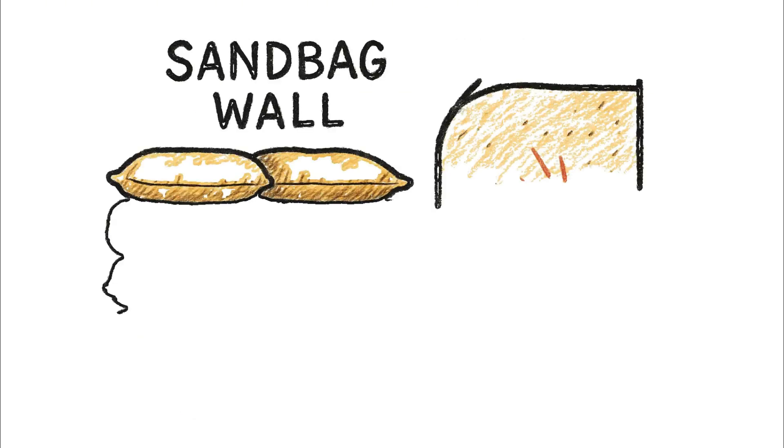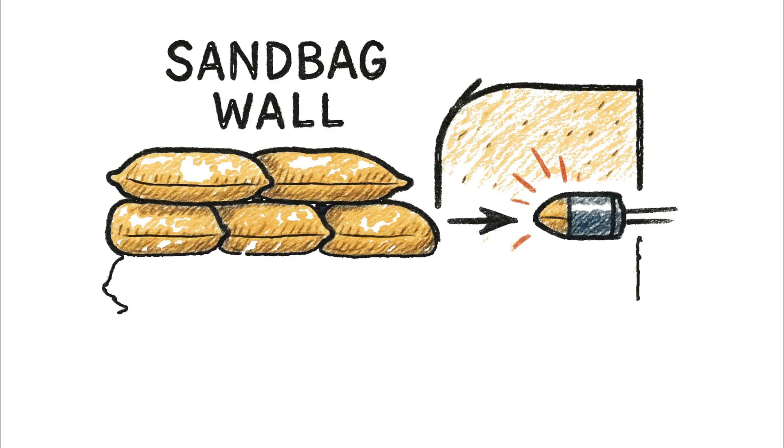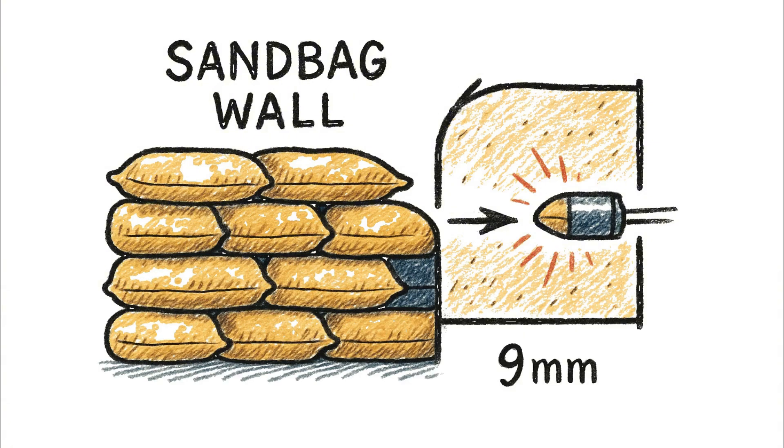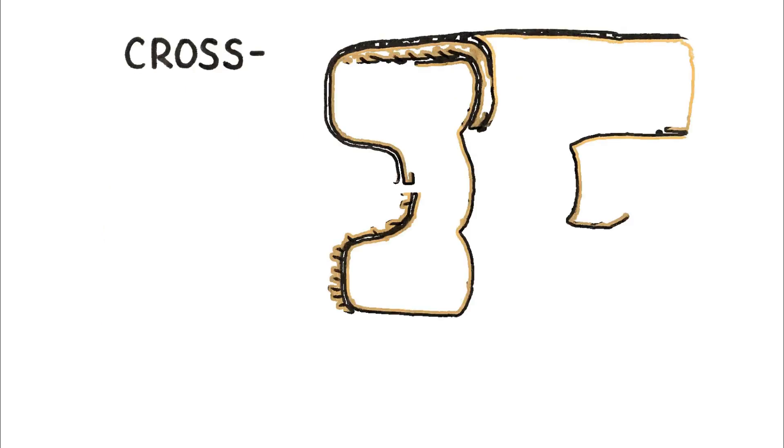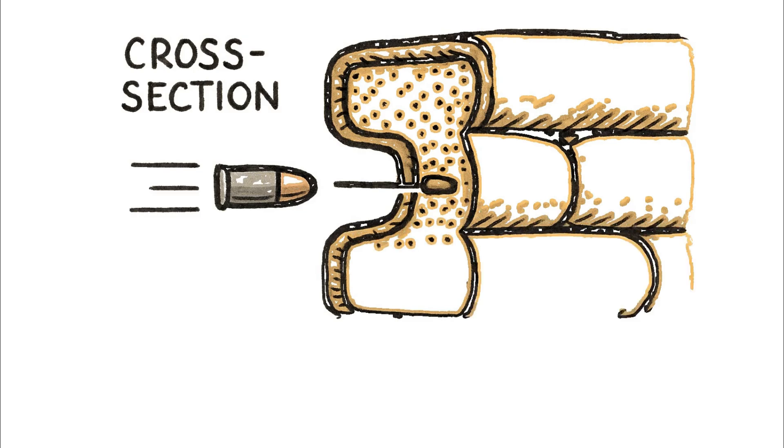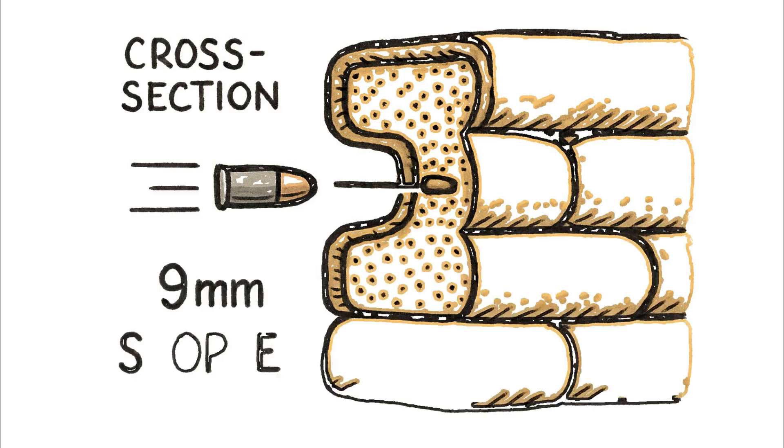Now, let's introduce a standard 9mm pistol round into the scenario, a capable round by any measure, but against a wall built like this the outcome is quite predictable. An analysis of the cross-section is revealing, because as the diagram shows, the bullet enters the first bag, but its energy is fully absorbed before it can exit.